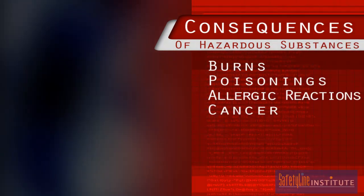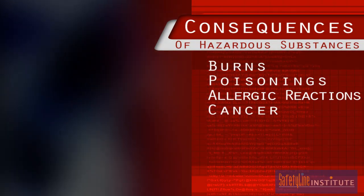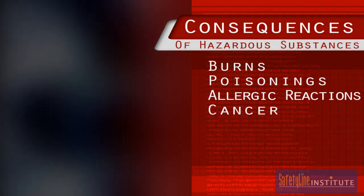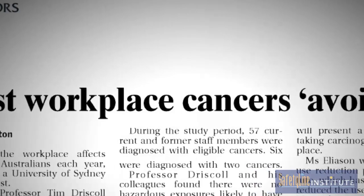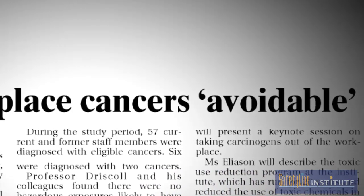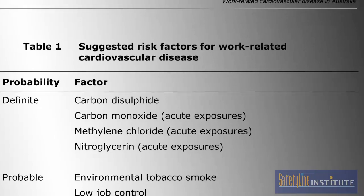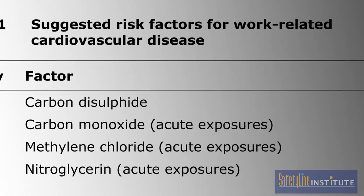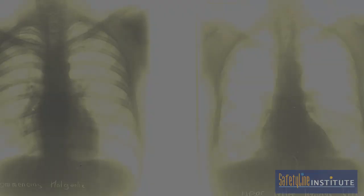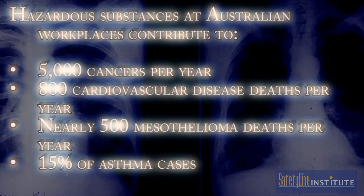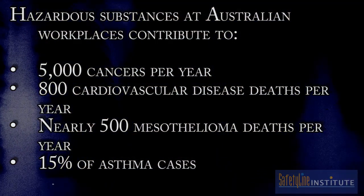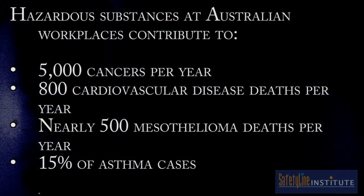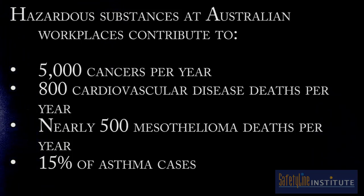Burns, poisonings, allergic reactions and cancer — these are some of the consequences of unsafe use of hazardous substances at work. SafeWork Australia estimates that, in Australia, 5,000 cancers each year are from occupational causes including exposure to hazardous substances. 800 deaths each year are the result of cardiovascular disease caused by chemicals at work. In a recent year, nearly 500 mesothelioma deaths were caused by asbestos, and 15% of all asthma cases are caused by chemicals at work.